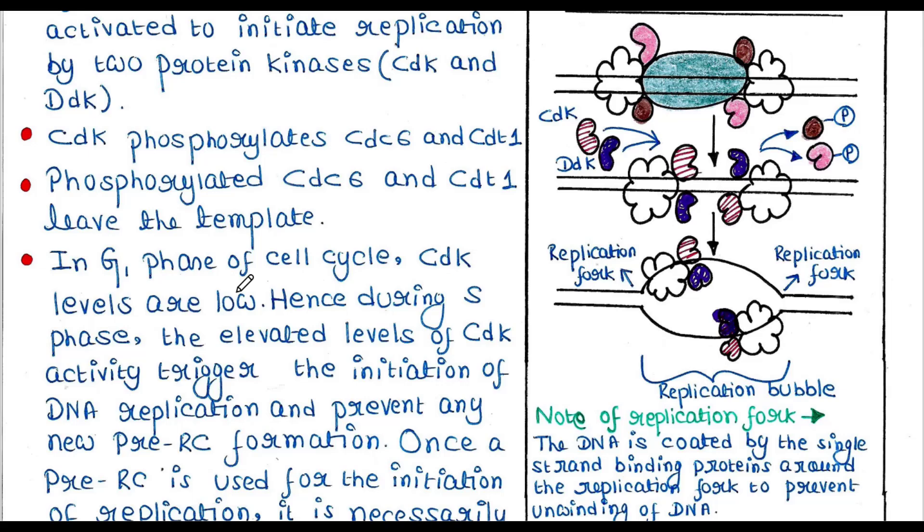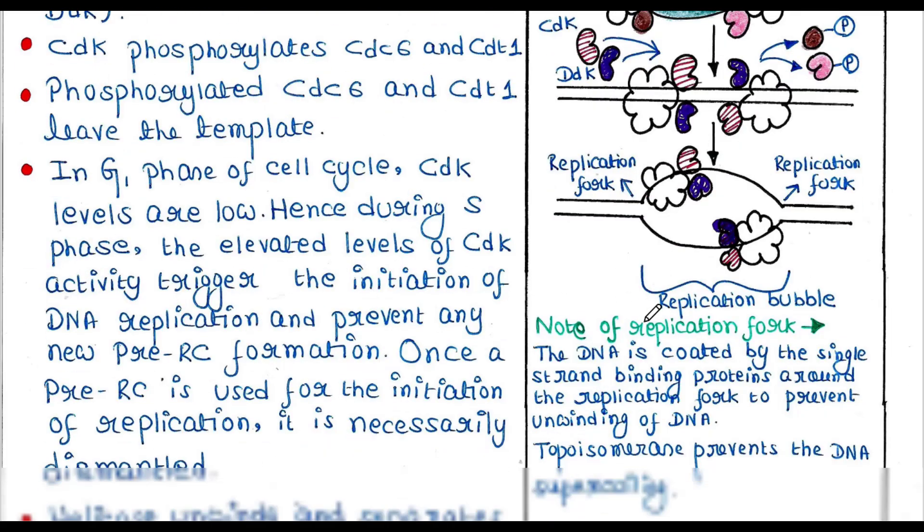Once CDC6 and CDT1 are phosphorylated, they leave the complex. Since they are leaving the complex, no new pre-RC is possible here. Once a pre-RC is used for the initiation of replication, it is necessarily dismantled.